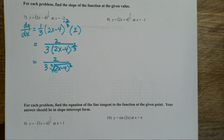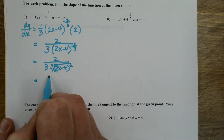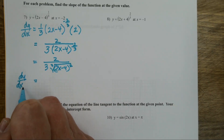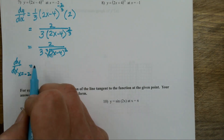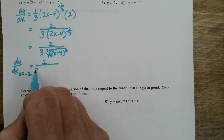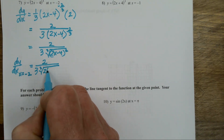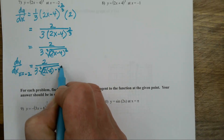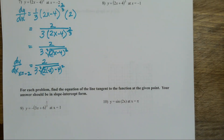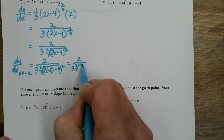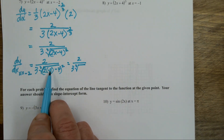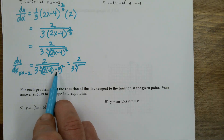Now I can plug in my value. This is dy/dx at x equals negative two — plug in negative two. This is two over three times the cube root of two times negative two minus four, squared. Two times negative two is negative four; negative four minus four is negative eight; negative eight squared is 64.